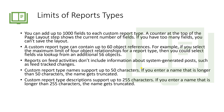Reports on feed activities do not include information about system-generated posts such as field tracking - that is one important point. Also, custom report type names support up to 50 characters. If you enter a name longer than 50 characters, the name gets truncated in Salesforce.